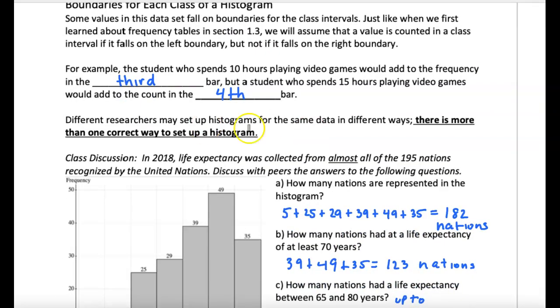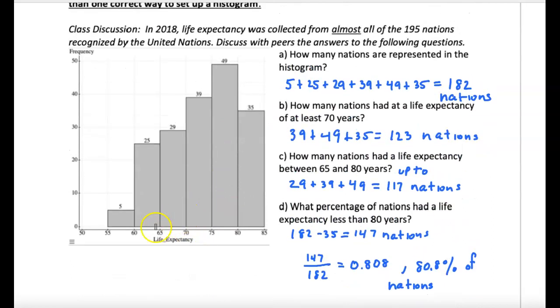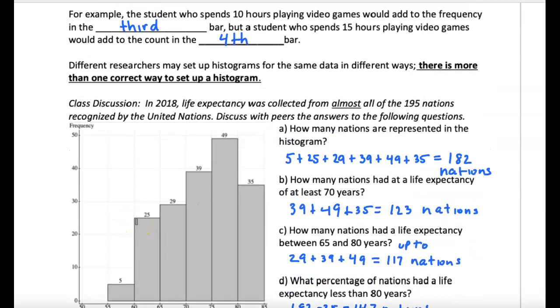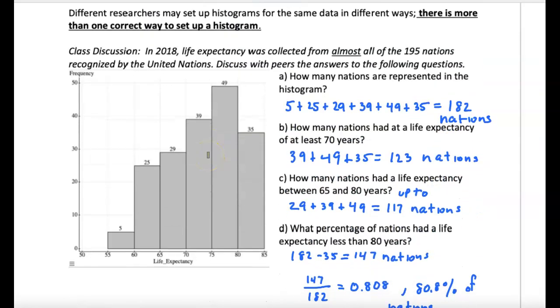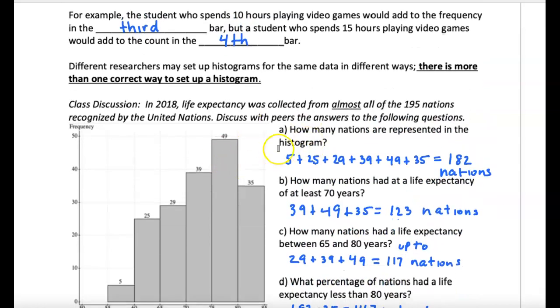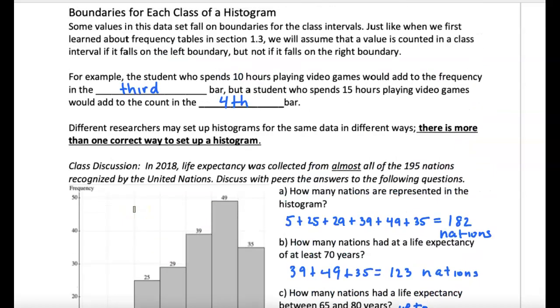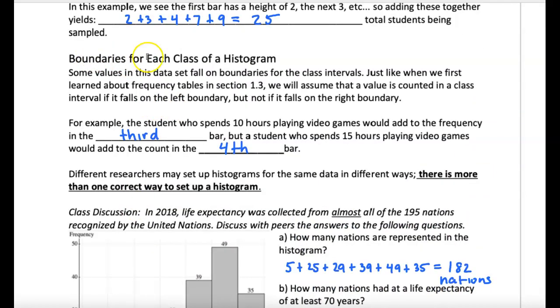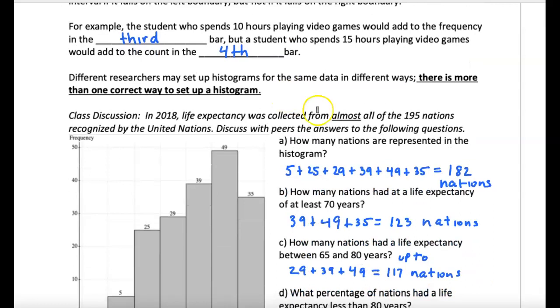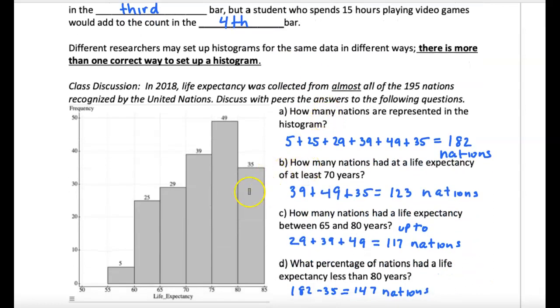Now, we have these other kind of situations where we have to distinguish, okay, if I get some new value, where would these values play? Where would they fall on these boundary points? And this is boundaries for each class of a histogram. And those are these class widths. But what happens? What does 55 to 60 mean?